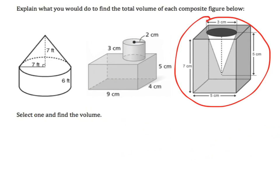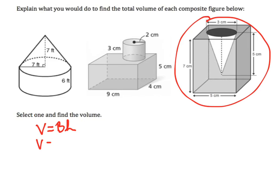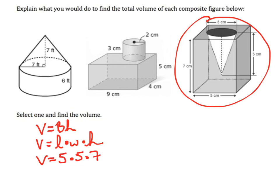Last and trickiest shape — this time I'm subtracting. I have the volume of all this, but not the volume of this cone. Let's figure out the volume of the rectangular prism first. We're assuming this is a square base, so volume equals length times width times height: 5 times 5 times 7. The volume is 175.